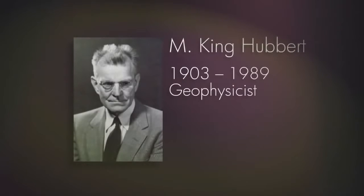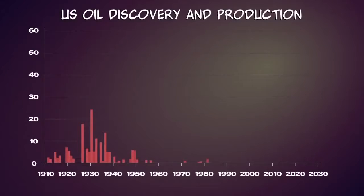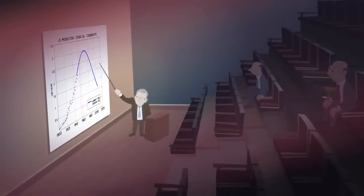In the 1950s, Shell geophysicist M. King Hubbert predicted that America's oil production would peak in 1970, 40 years after the peak of US oil discovery. Few believed him.